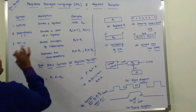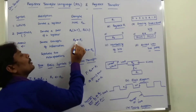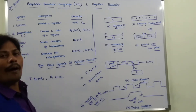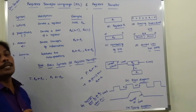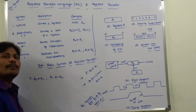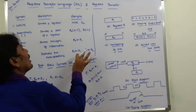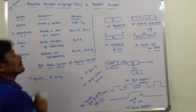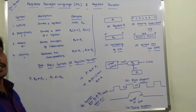Third, the arrow mark is used to denote transfer of information — for example, R2 ← R1 means the content of register R1 is transferred to register R2. Fourth, the comma operator is used to separate micro operations. For example, R2 ← R1, R1 ← R2 represents two micro operations: the content of R1 is transferred to R2, and the content of R2 is transferred to R1.